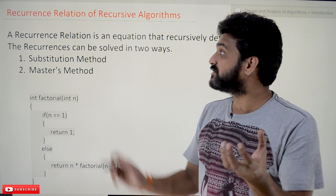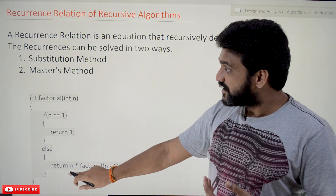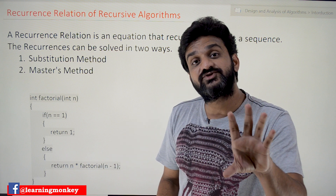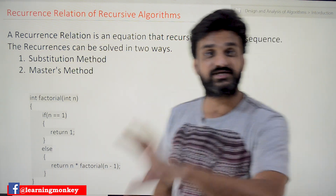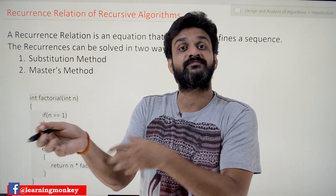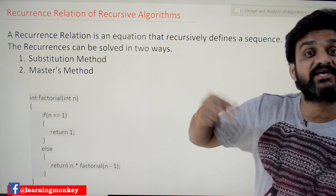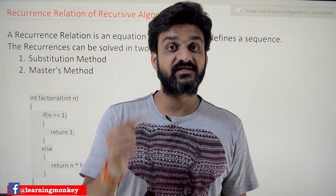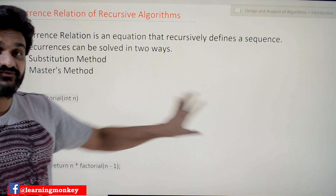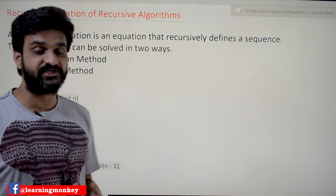How are recurrence relations used with recursive algorithms? First, in order to find the efficiency of recursive functions — here is the recursive function for factorial — we have to find the recurrence equation. After finding that recurrence equation, we have to solve it. To solve it, we have two methods: one is the substitution method and the other is the master's method. Using either of these methods, we get the efficiency of the algorithm. In this class, we will understand how to write the recurrence relation for a given algorithm; in the next classes we will discuss how to solve it.